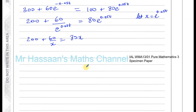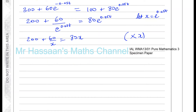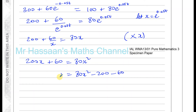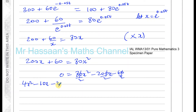This looks like a quadratic equation. Multiplying both sides by x, the denominator disappears and I get 200x plus 60 equals 80x squared. Rearranging with x squared positive: 80x squared minus 200x minus 60 equals 0. Dividing by 10 and then by 2 gives 4x squared minus 10x minus 3 equals 0.